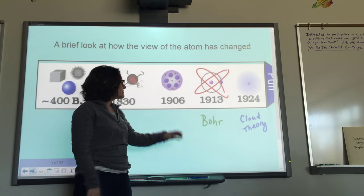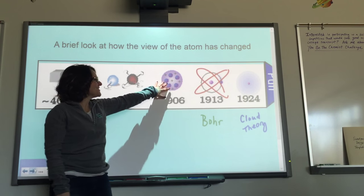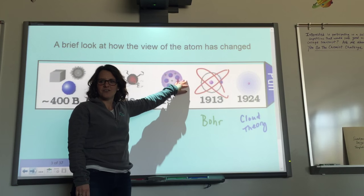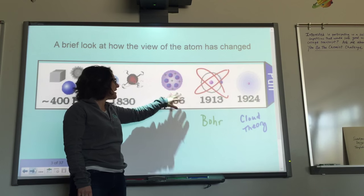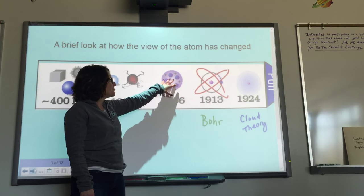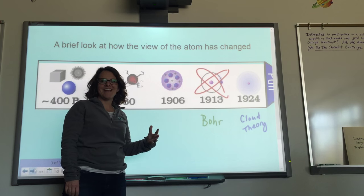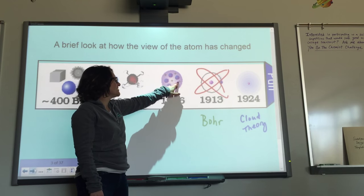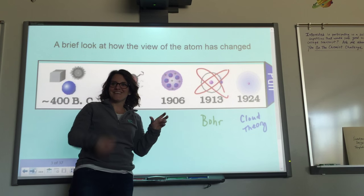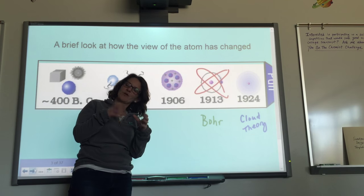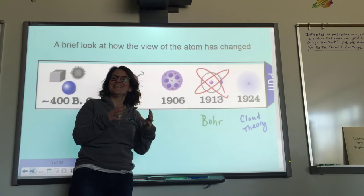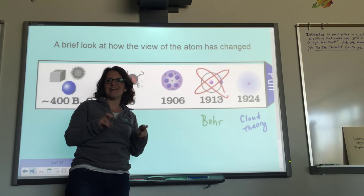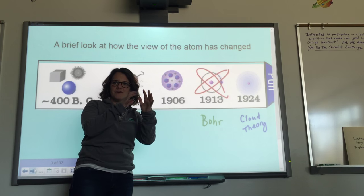Why is that one called Plum Pudding? He was British, and he said the electrons were like raisins — or plums — in his Plum Pudding, and he just gave it that name because he made a model. Thompson had this idea that the atom looked like this when he was eating breakfast one day.